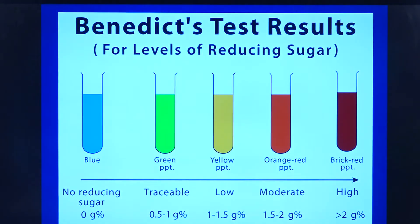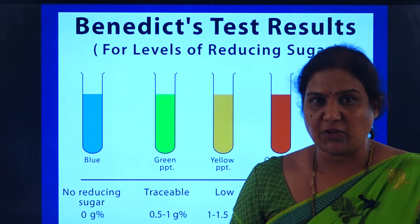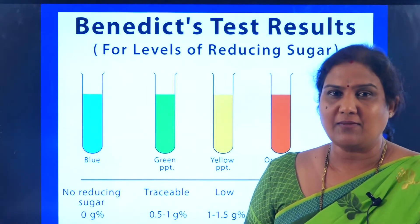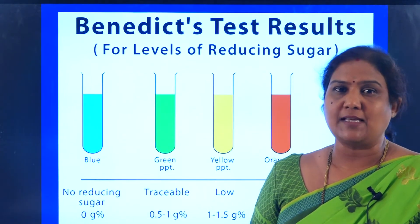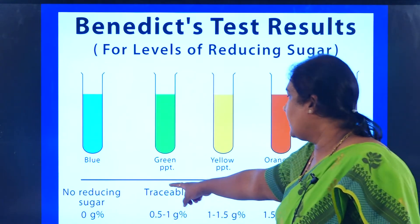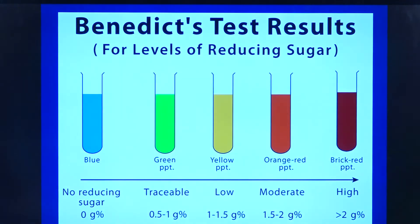Let us now check the Benedict's test results for levels of reducing sugar. This test is usually conducted by diabetic patients themselves. When a patient is chronically diabetic, the doctor advises that there is no need to go to the laboratory very frequently — they can conduct this at home using the Benedict's test. Without heating it is blue, but if there are very trace amounts of glucose in the urine, it indicates 0.5 to 1 percent glucose is present.